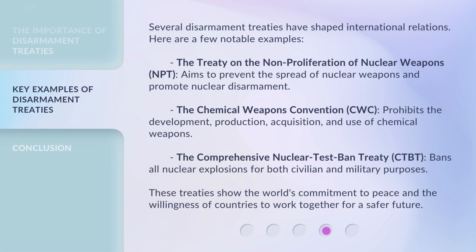Several disarmament treaties have shaped international relations. Here are a few notable examples. The Treaty on the Non-Proliferation of Nuclear Weapons, NPT, aims to prevent the spread of nuclear weapons and promote nuclear disarmament. The Chemical Weapons Convention, CWC, prohibits the development, production, acquisition, and use of chemical weapons. The Comprehensive Nuclear Test Ban Treaty, CTBT, bans all nuclear explosions for both civilian and military purposes. These treaties show the world's commitment to peace and the willingness of countries to work together for a safer future.